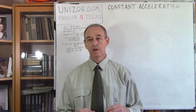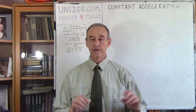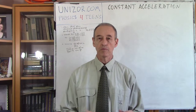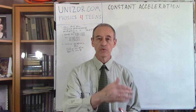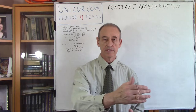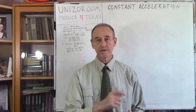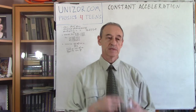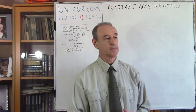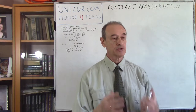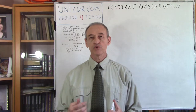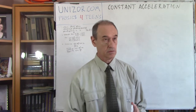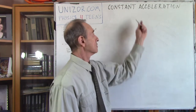The previous lecture was about the simplest possible motion: uniform motion, when we are moving along a straight line trajectory with the same speed, the same velocity vector. Today we will consider the motion with constant acceleration.